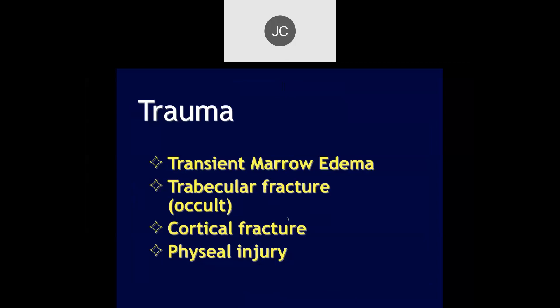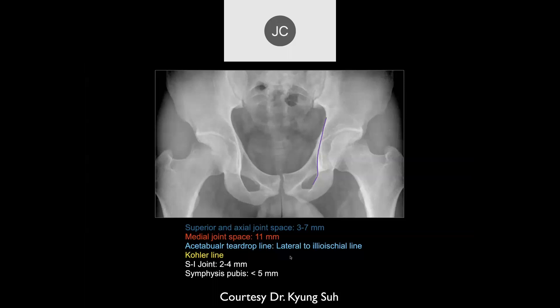We'll talk about transient marrow edema, trabecular fractures, cortical fractures, and some fascial injuries. Let's look at a few measurements that sometimes come in helpful. We have the superior joint space, which is three to seven millimeters. We have the medial joint space, which is typically around 11 millimeters. And then there's the teardrop line and SI joints.